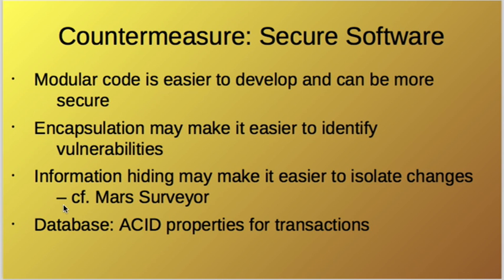In a lot of computer software you also want ACID properties for transactions: atomicity, consistency, isolation, and durability. Databases basically guarantee these properties. They are especially important in multi-threaded code. Locks and semaphores give you atomicity, and you also want consistency, isolation, and durability.